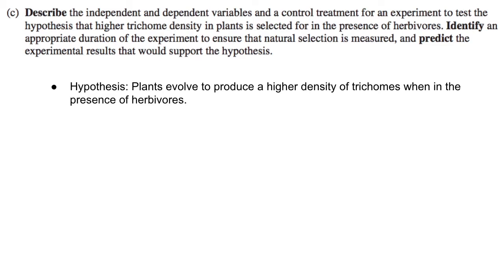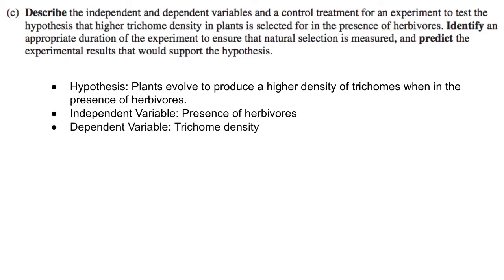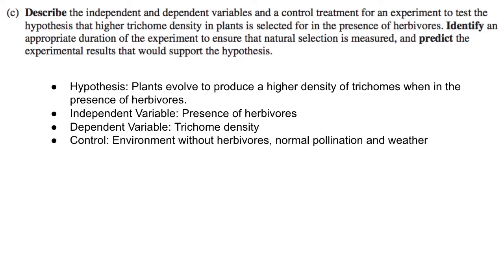Our independent variable is the presence or absence of herbivores, since that is what we are trying to see will induce a change. Our dependent variable is the density of the trichomes — we want to see if trichome density changes based on the environment the plants are in. Our control group is a population of plants that does not experience predation by herbivores, with all other conditions normal — normal pollination and weather — and those factors are kept the same for the experimental group as well.